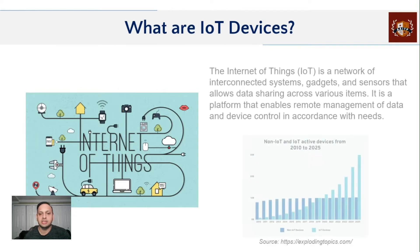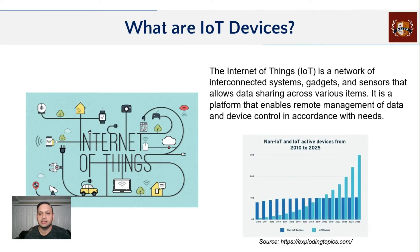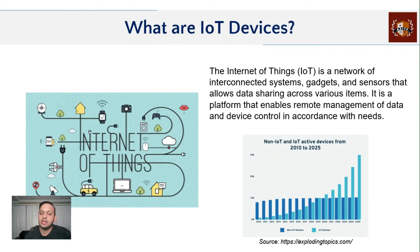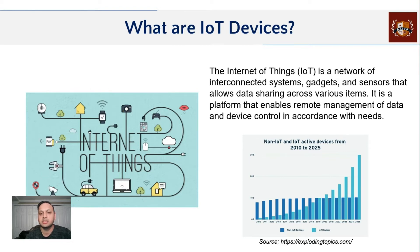By definition, IoT means Internet of Things. It is the interconnection of systems and gadgets along with sensors that share data, helping to communicate better and evolve technology as a whole. IoT has really picked up in recent years, as you can see in the graph below, which is sourced by Exploding Topics.